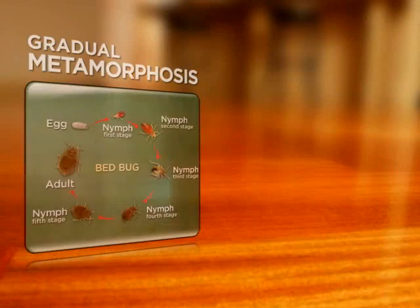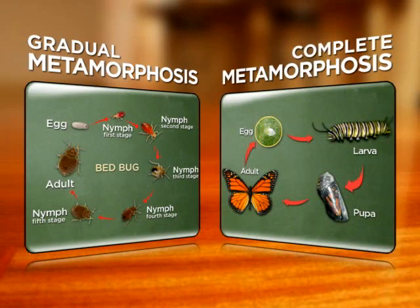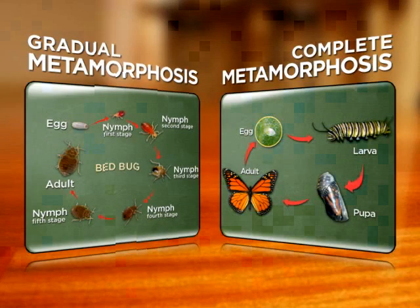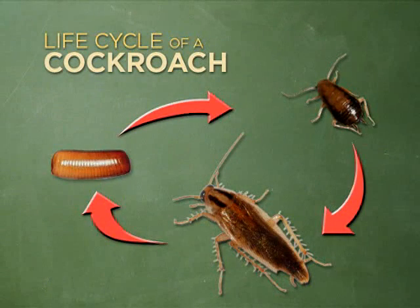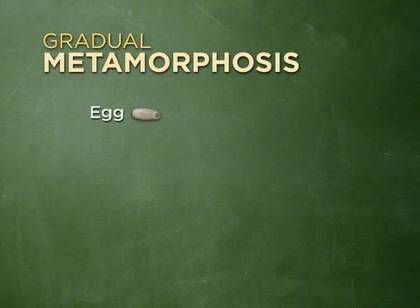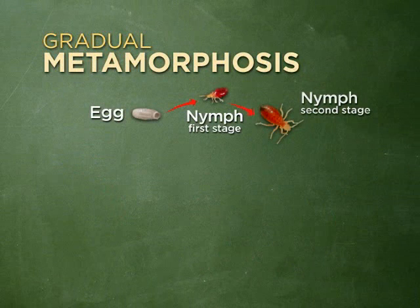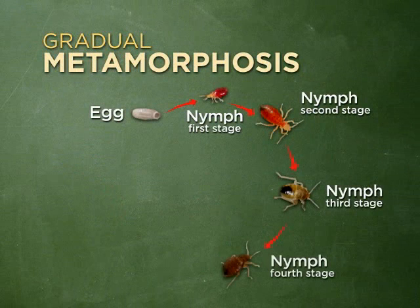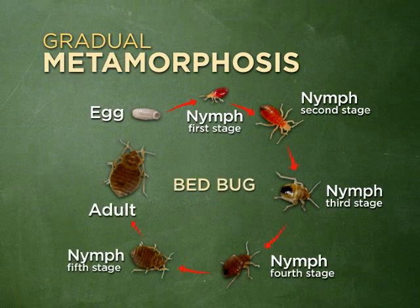The best way to understand how insect growth regulators fit into your program is to look at the pest's life cycle. Insects develop in one of two ways before they become adults: either gradual or complete metamorphosis. Gentrol Insect Growth Regulator is effective in both. Cockroaches and bed bugs grow through gradual metamorphosis, where the young insects look similar to the adult but won't have wings or may have slightly different coloring. As soon as the egg hatches, the young are called nymphs, and they undergo several growth stages, or molts, before becoming adults.